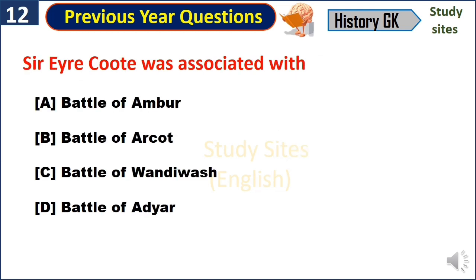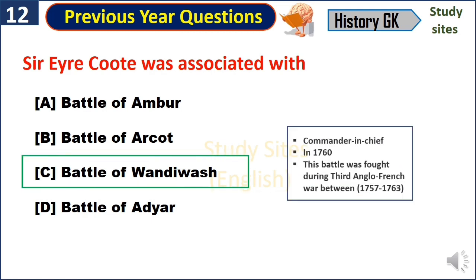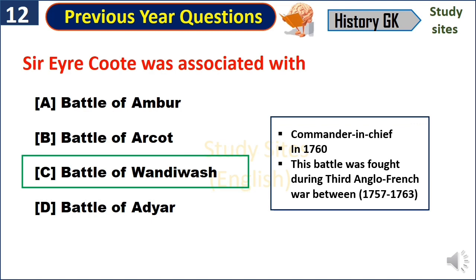Sir Eyre Coote was associated with the Battle of Wandiwash. He was the commander-in-chief of the English army, and this battle was fought between 1757 and 1760 during the 3rd Anglo-French War, which lasted from 1757 to 1763.